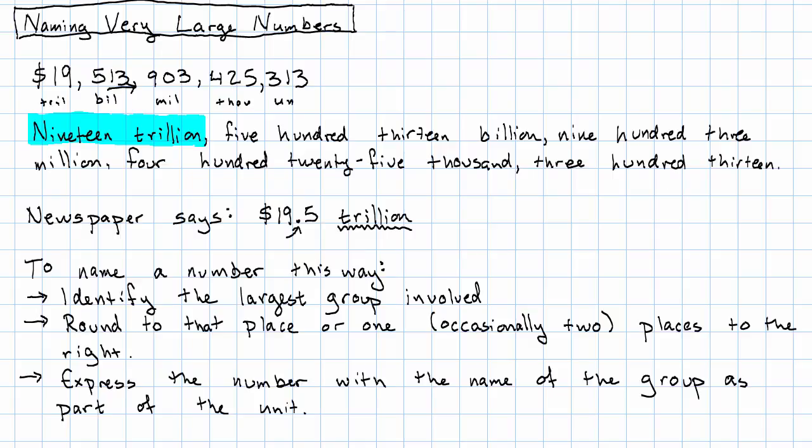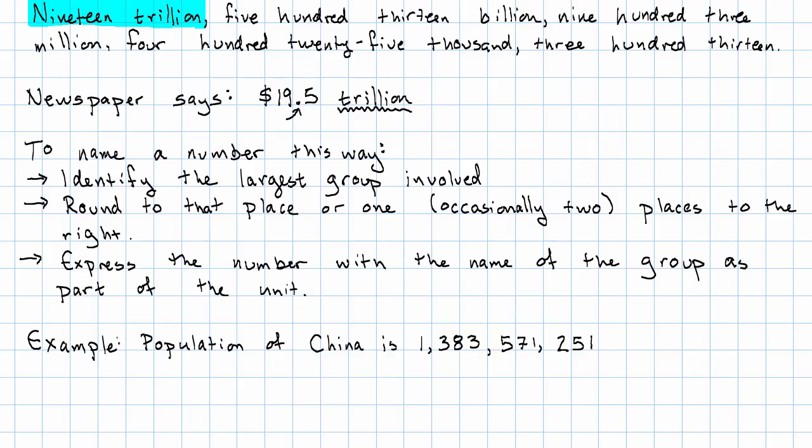Let's see an example of following that process. It sounds really complicated, but it's actually really simple. As of this recording, the population of China is this number. To say its name, I'm going to mark the units, the thousands, the millions, and the billions. So the largest group is the billions.